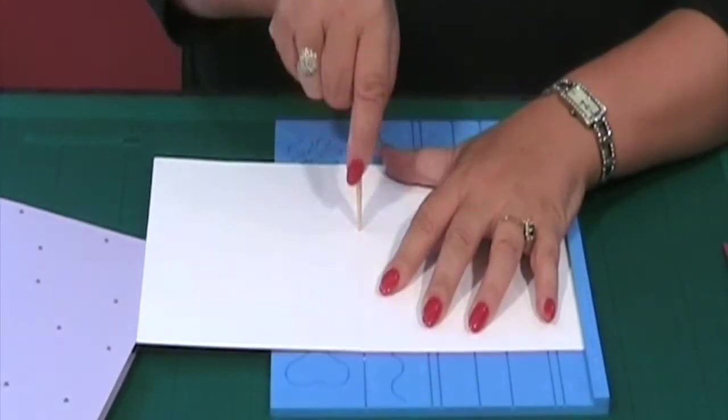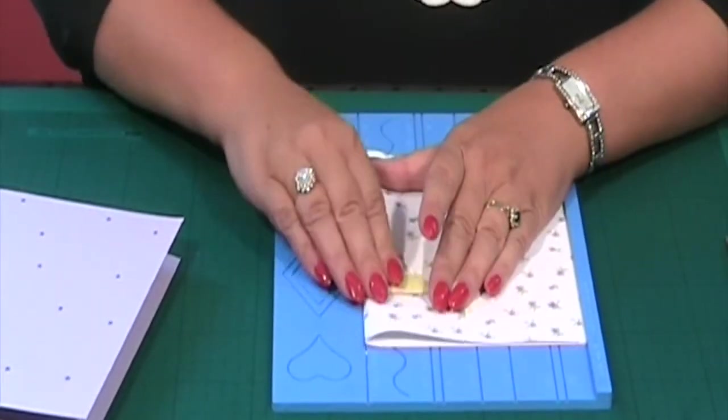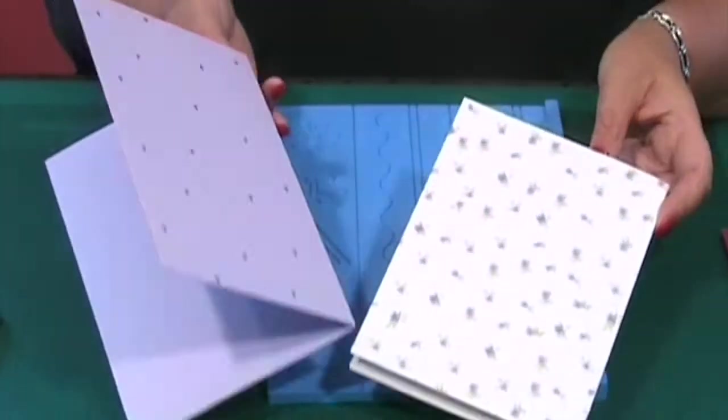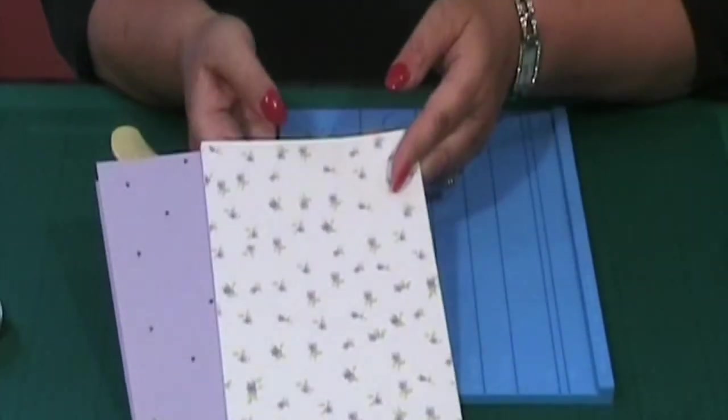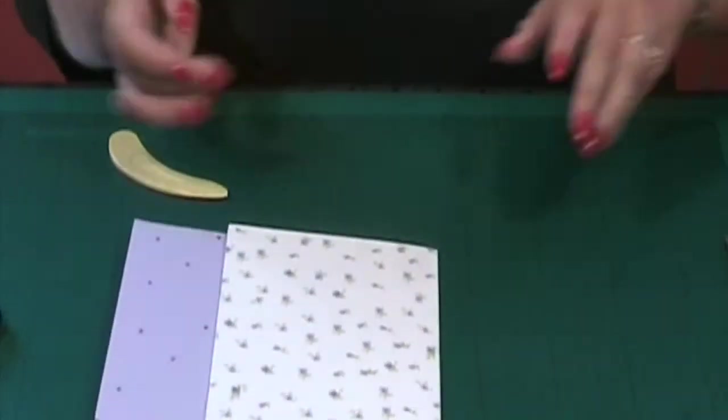Now you're going to score your card in half, and both pieces you're going to score as if you were making a normal card with the pretty side to the outside. So they're both to be scored in half in the same manner, pretty side to the outside.